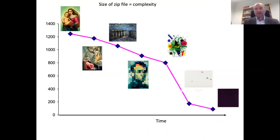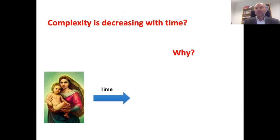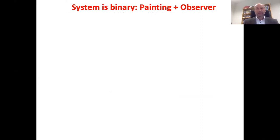When I put these old paintings into a zip archive, I realized the file size drops dramatically over time. ZIP is actually measuring complexity — so the complexity of the paintings decreases. I also noticed that the complexity of binding sites in evolution, from bacteria to humans, also goes down — starting from big, certain binding sites, getting shorter and less certain, until we're talking about sites that almost don't exist. So complexity decreases over evolutionary time — but why?